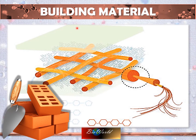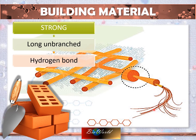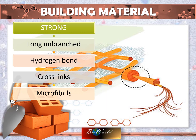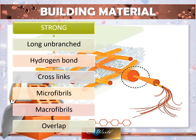Cellulose is suitable as a building material for the synthesis of the plant cell wall because, firstly, it is strong. The reason it is strong is its structure. Cellulose is long and unbranched, preventing it from being broken easily. Each cellulose chain hydrogen bonds with the next parallel cellulose chain by forming cross-links. These cross-links hold the cellulose chains together so they accumulate and form microfibrils. These microfibrils then bind together to form macrofibrils, and they overlap one on top of the other, making them a completely strong molecule.